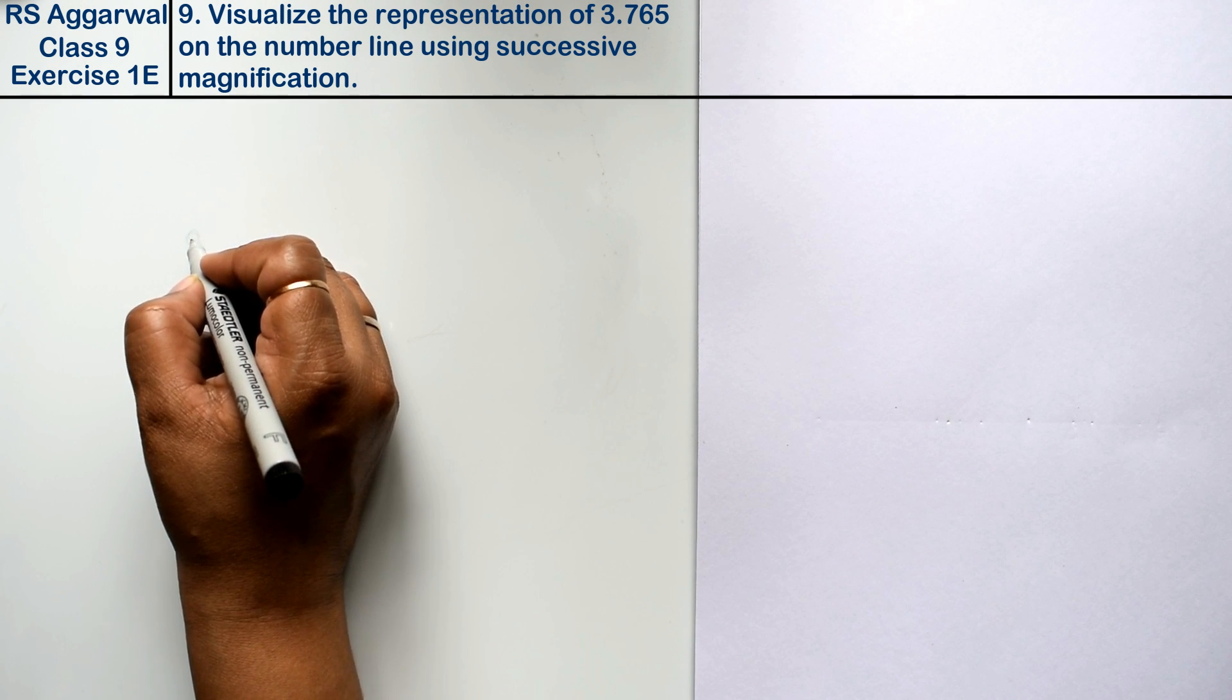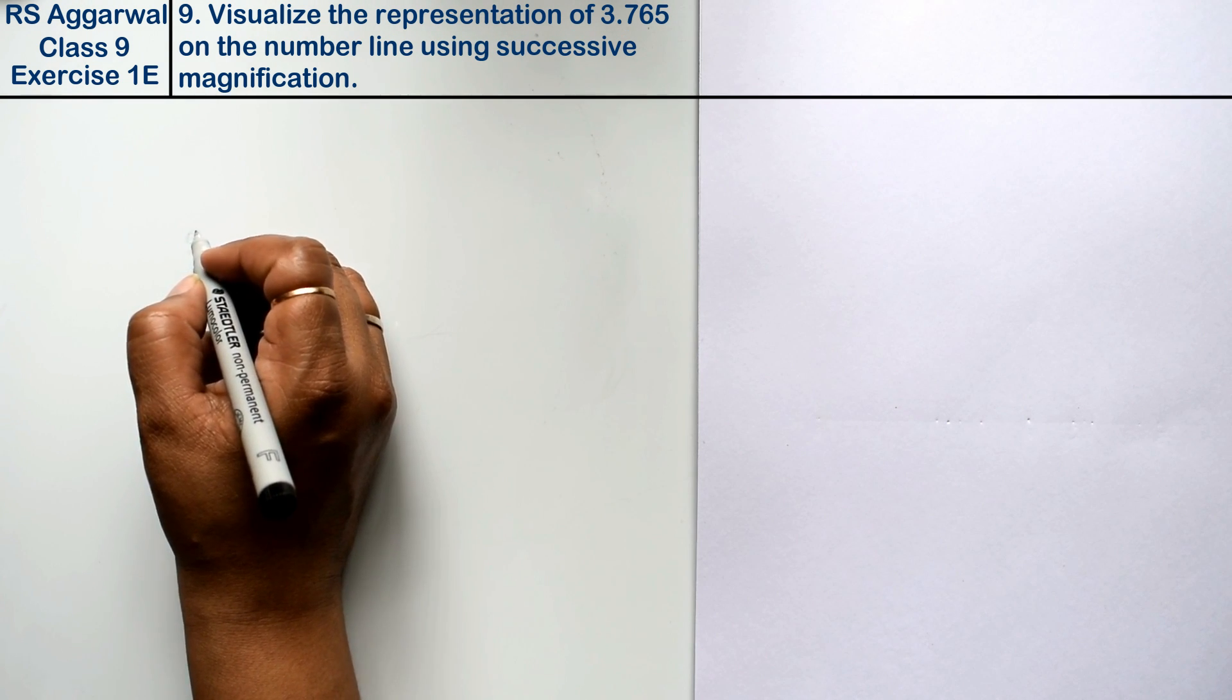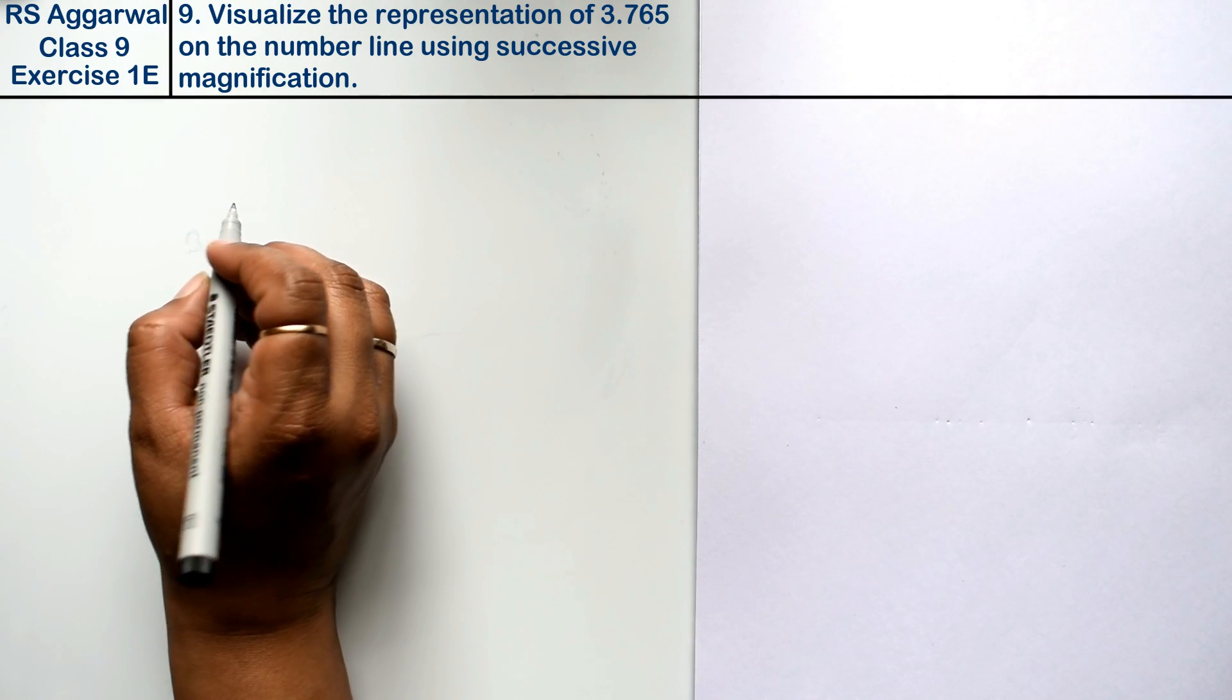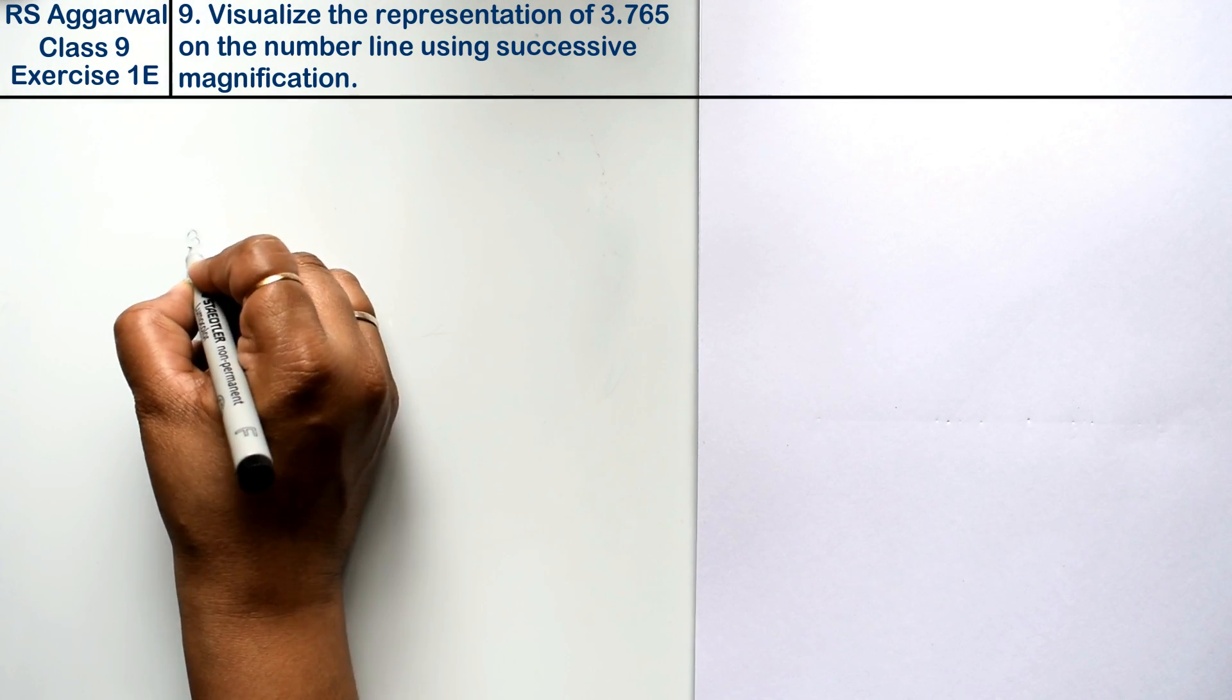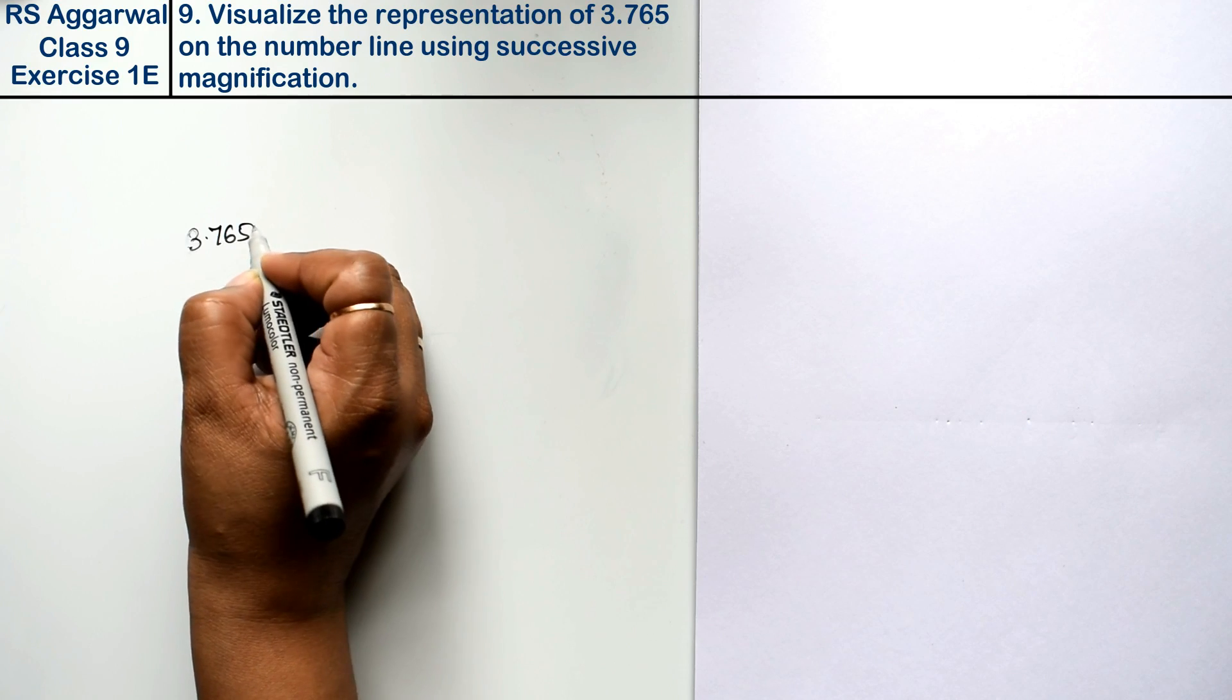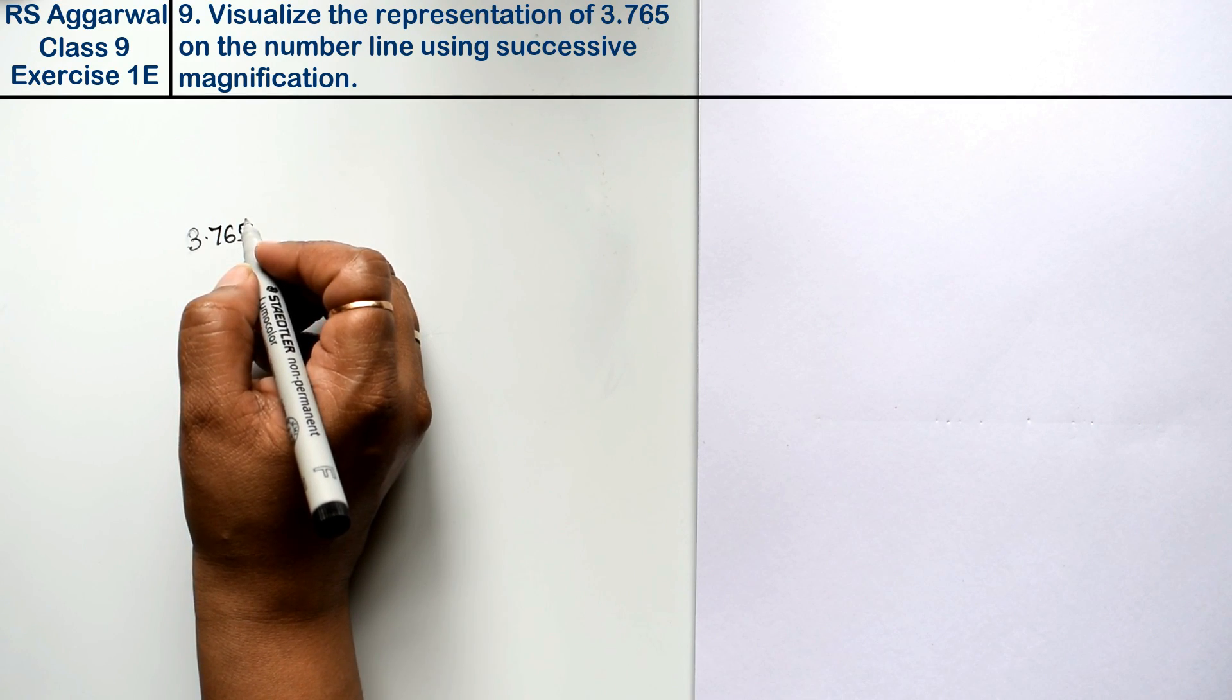Let's do question number 9 of exercise 1E, that is number system. Question number 9 is visualizing the representation of 3.765 on a number line by successive magnification.